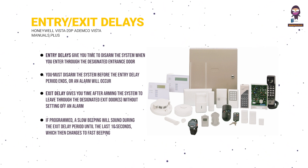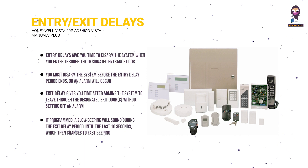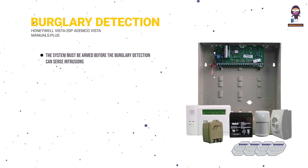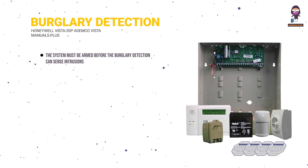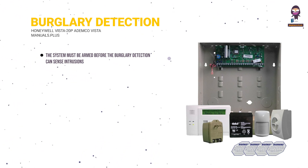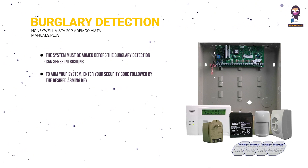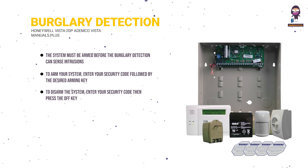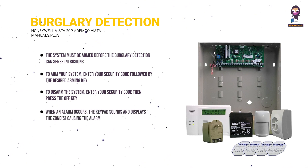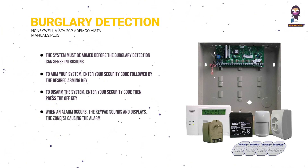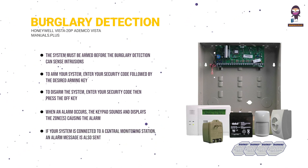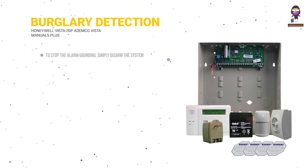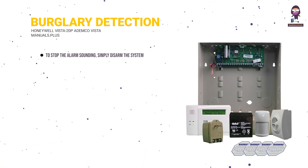See your installer for your delay times. See the full user guide for details on exit error alarms. Notes on burglary detection: the system must be armed before burglary detection can sense intrusions. To arm your system, enter your security code followed by the desired arming key. To disarm the system, enter your security code then press the off key. When an alarm occurs, the keypad sounds and displays the zones causing the alarm. If your system is connected to a central monitoring station, an alarm message is also sent. To stop the alarm from sounding, simply disarm the system.